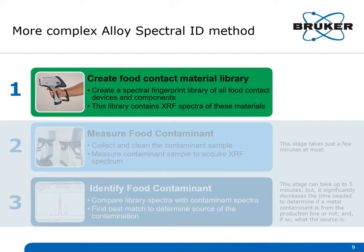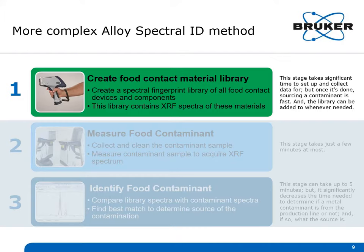There are three primary stages required to optimally use the more complex alloy spectral fingerprint ID method. The first is to create a food contact material library. This stage takes significant time to set up, as you need to create a spectral fingerprint library of all food contact devices and components for a given production line. But once it's done, sourcing a contaminant is fast, and the library can be edited whenever there are changes on the line.